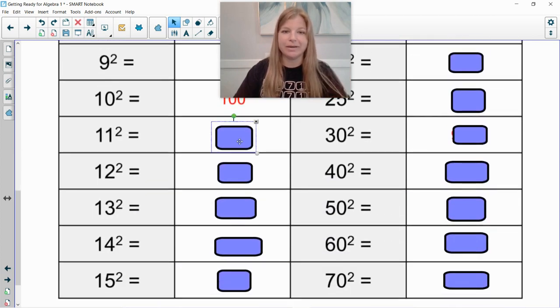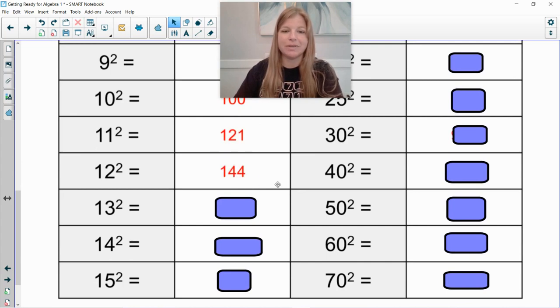11 squared. 11 times 11 is 121. 12 squared. 12 times 12 is 144. Now here's where they start to get a little bit interesting. So usually after the first 12: 1, 4, 9, 16, 25, 36, 49, 64, 81, 100, 121, 144. Take a breath. Those are your first 12.